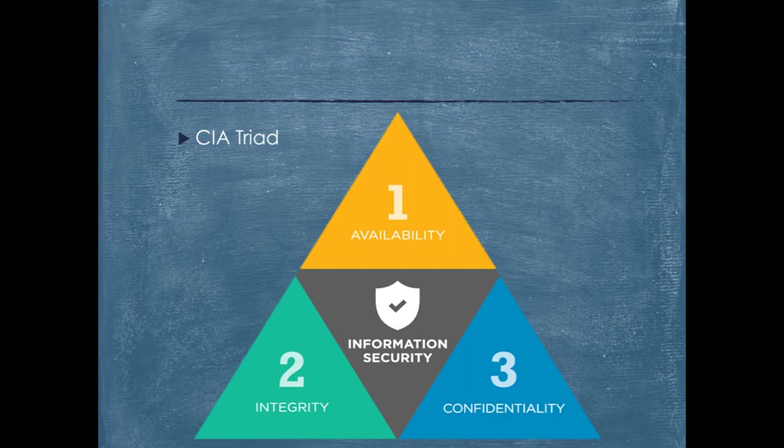In IT, we have two kinds of data. One is the data which is sitting at rest, in your hard disks and in storage. Second is the data which is in transit, moving from one point to another. We, as the guardians of data, are responsible to ensure the confidentiality, integrity, and availability of the data at rest and the data in transit.